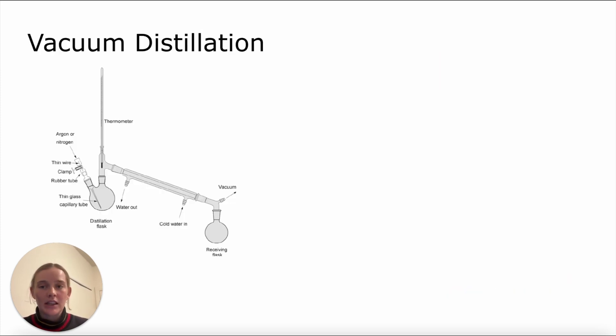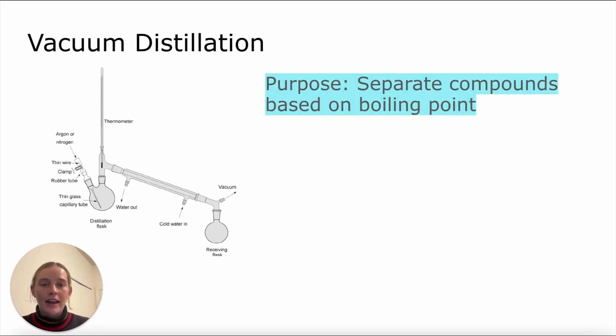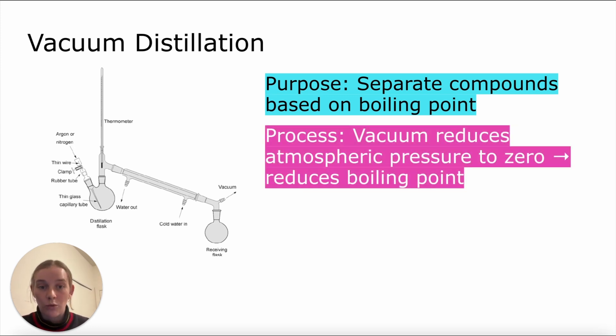One way that AAMC loves to test us on pressures and boiling point is to think about vacuum distillation. The purpose of vacuum distillation is to separate compounds based on their boiling points. You can see we have a vacuum distillation set up here on the left. We have our distillation flask that goes up and then goes into the condensing tube and then into the receiving flask. The way that a vacuum distillation works is that we essentially use a vacuum to reduce the atmospheric pressure in the distillation flask to zero. That in turn decreases the boiling points of both of our compounds. We can think about this going back to the last slide. If we decrease atmospheric pressure, we decrease the pressure pushing down on that liquid, which reduces the amount of energy that we need in order to boil that liquid, therefore reducing the boiling point.